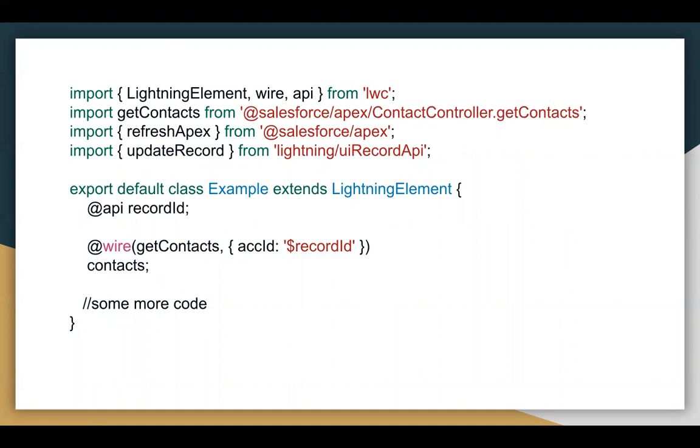So these are the three decorators: @api, @wire, and @track, available in Lightning Web Components.